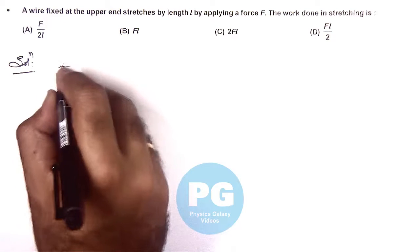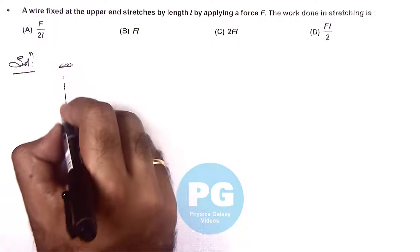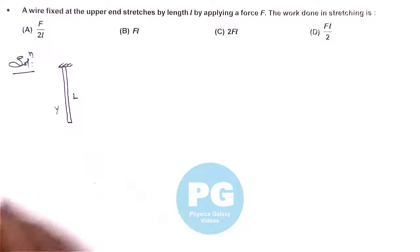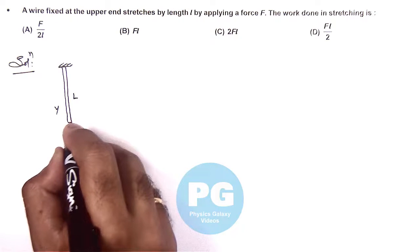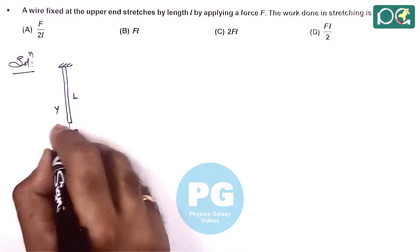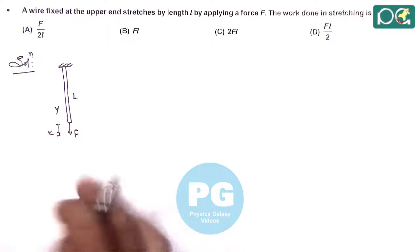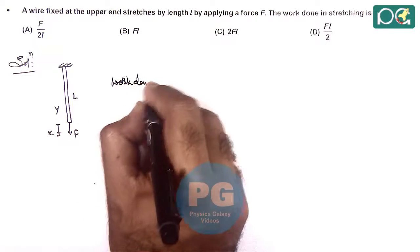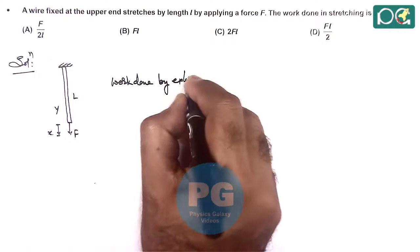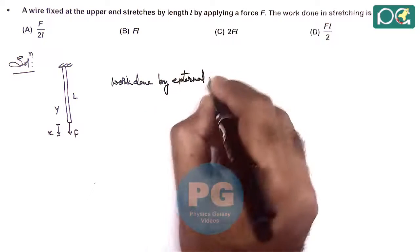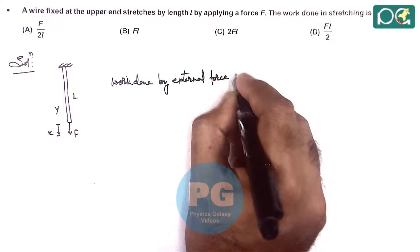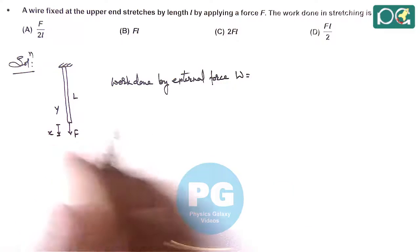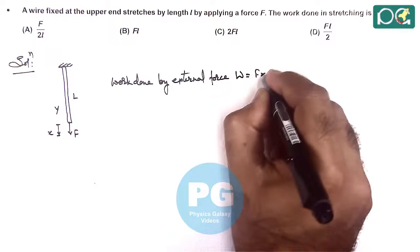We are given that a wire is fixed at the upper end. Say it is of length L and its Young's modulus is Y. At the bottom end we apply a force F and we stretch it by a distance X. If we wish to calculate the work done by external force, we can directly state it is simply the force multiplied by the displacement of point of application, which can be written as FX.